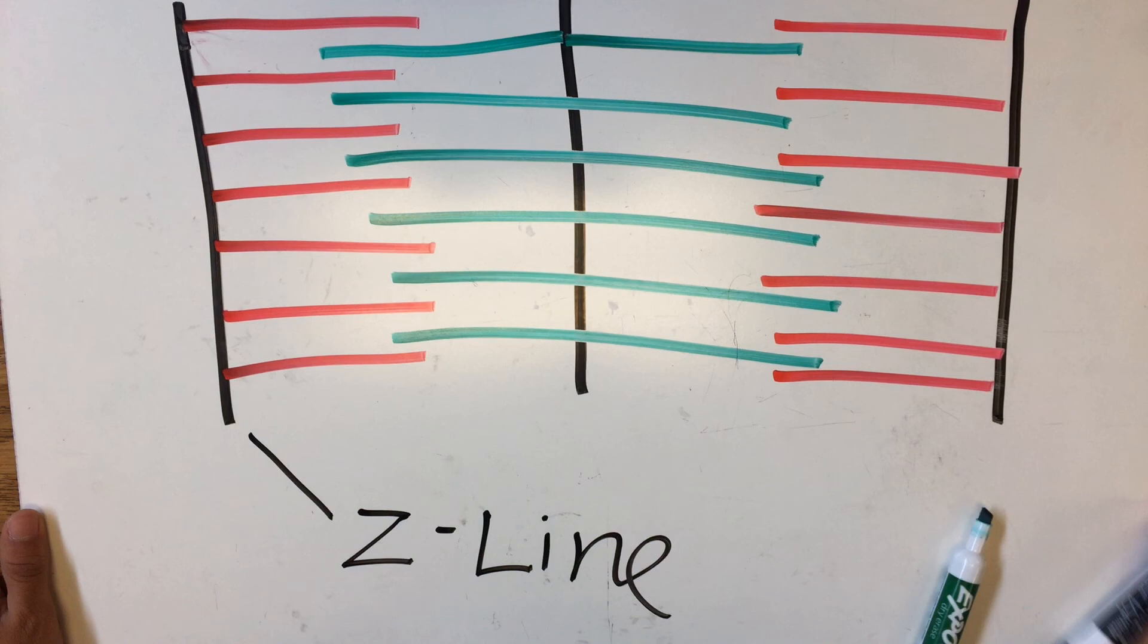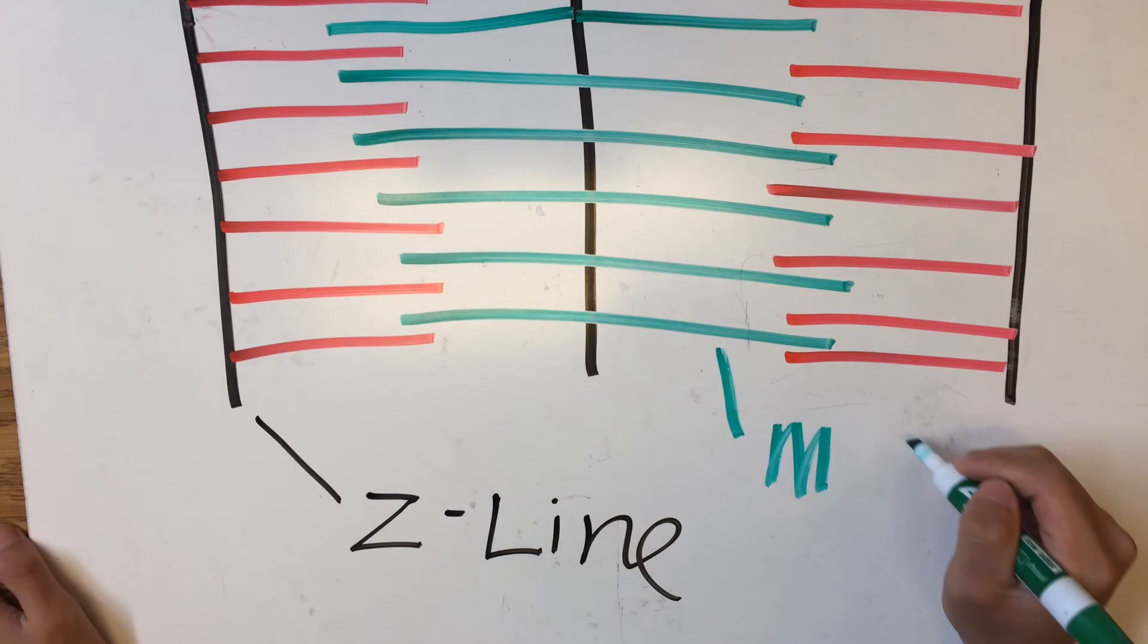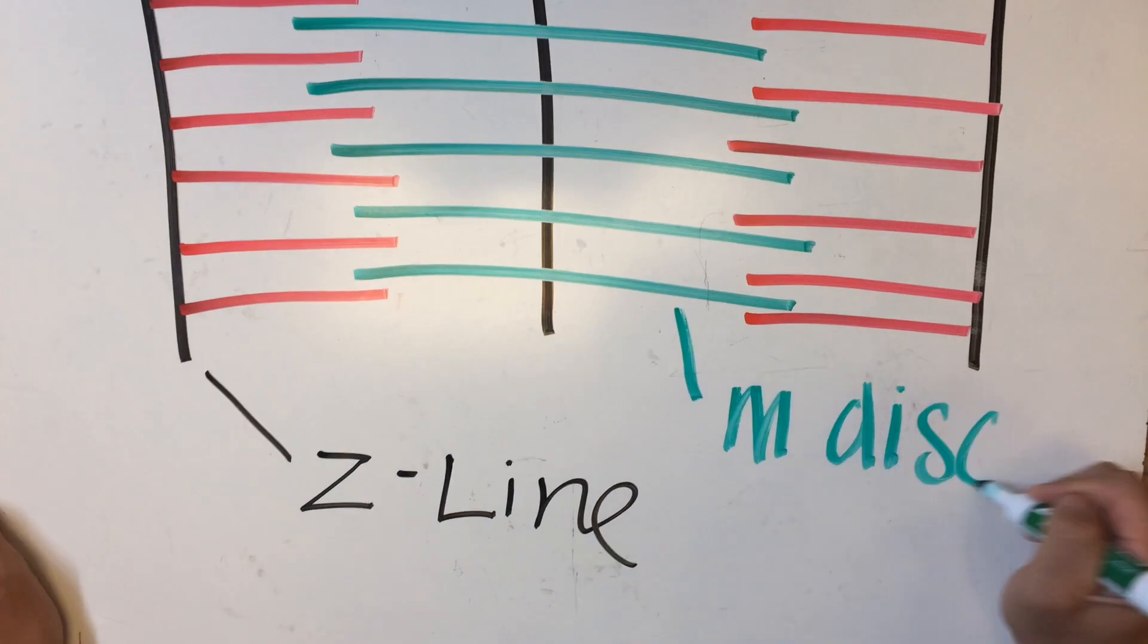The black lines are the z lines. They are the bands that mark the sarcomere's borders. This is called the M-disc or the thick filaments or the myosin. Now these thick filaments actually pull in the thin filaments that actually contract the muscle.